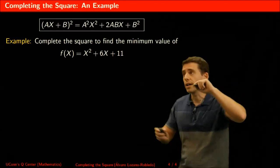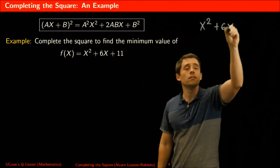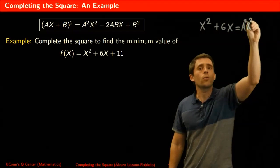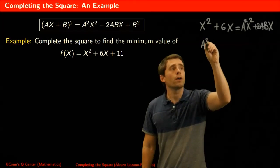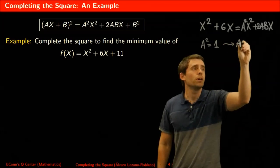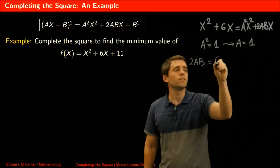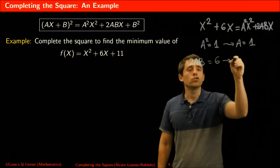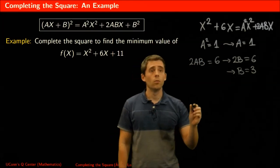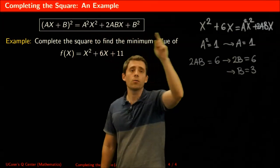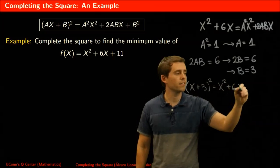I want to write x squared plus 6x to match something like a squared x squared plus 2abx. Again I get that a squared equals 1, so I'll choose a equals 1. And 2ab equals 6, so since a is 1, that gives 2b equals 6, and therefore b equals 3. Looking at what the full square would be with a equals 1 and b equals 3: that is x plus 3 squared, which equals x squared plus 6x plus 9. These two terms match the first two terms of my equation.